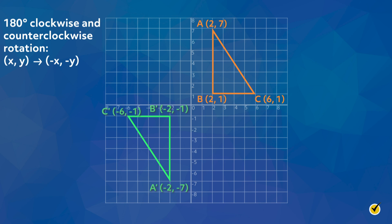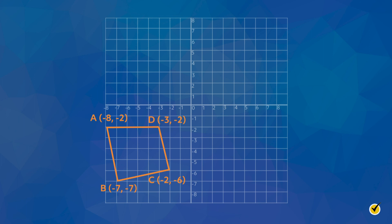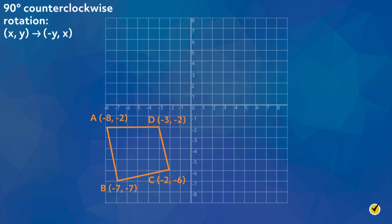Here is quadrilateral A, B, C, D. To rotate quadrilateral ABCD 90 degrees counterclockwise about the origin, we will use the rule (x, y) becomes (-y, x). Let's apply the rules to the vertices to create the quadrilateral A', B', C', D'.